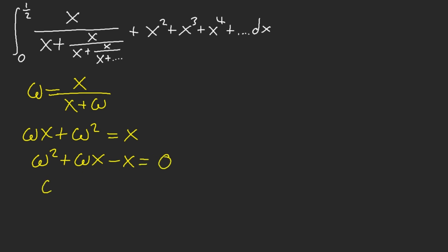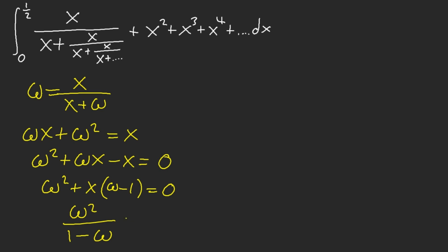Let me factor this — you'd probably use the quadratic formula, but just trust me. We get 1 minus omega, and isolating x gives us omega squared over 1 minus omega. I think some of you math olympians already know where this is going — this is a geometric series. This is x squared over 1 minus x.